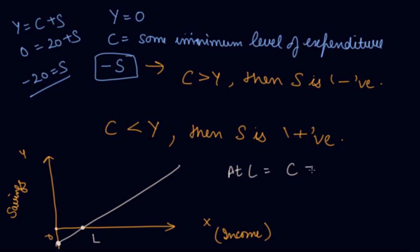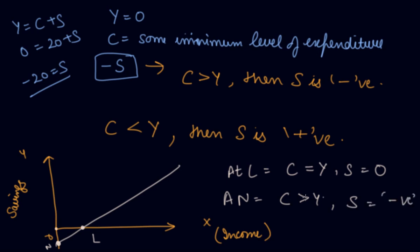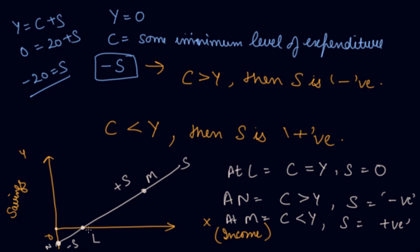At point L, consumption is equal to income, so savings is zero — this is where the saving curve crosses the X-axis. At point N below that level, consumption is greater than income, so saving is negative. Above point L, income exceeds consumption, so saving is positive. This is the complete saving function.